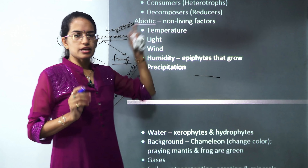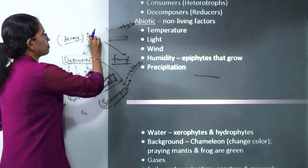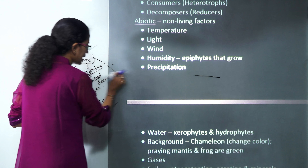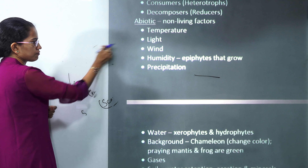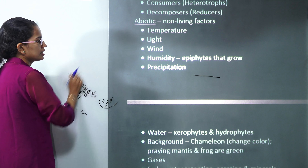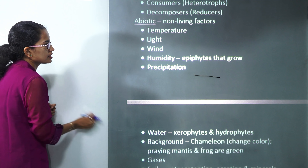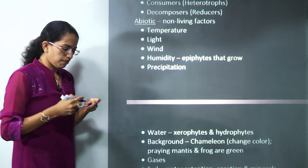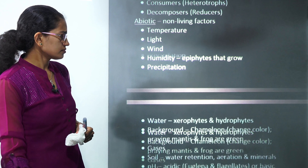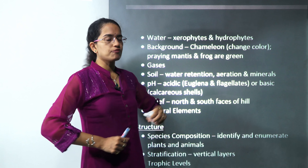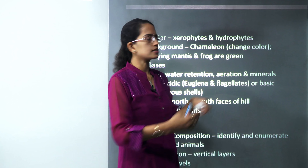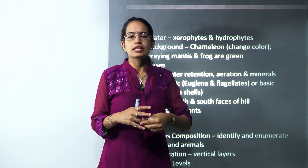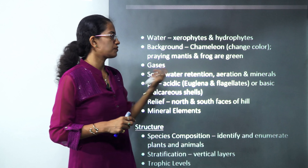Coming on to the abiotic components: temperature, light (photosynthesis occurs in presence of light), wind level, humidity (in humid conditions epiphytes grow), and rainfall. Regarding water: if there is lack of water, you have xerophytic vegetation as seen in deserts; however in areas rich in water, you have hydrophytes present in water bodies or shallow waters.